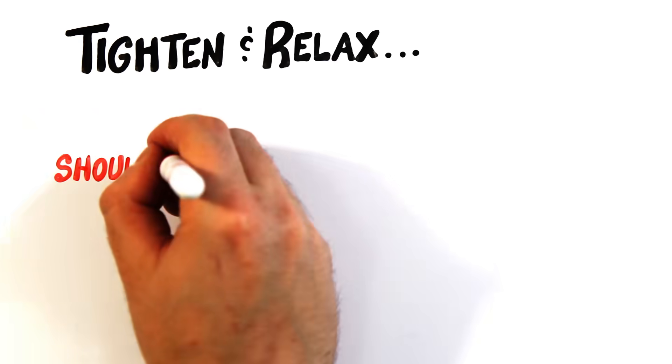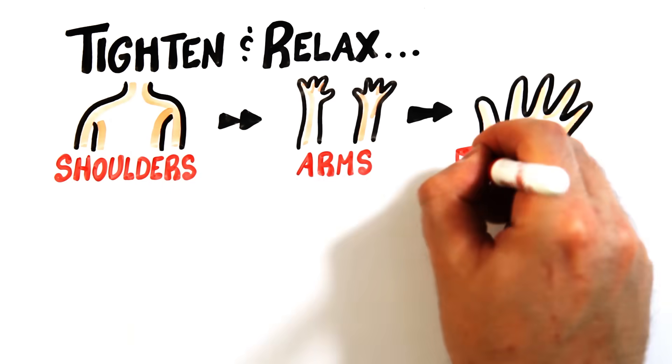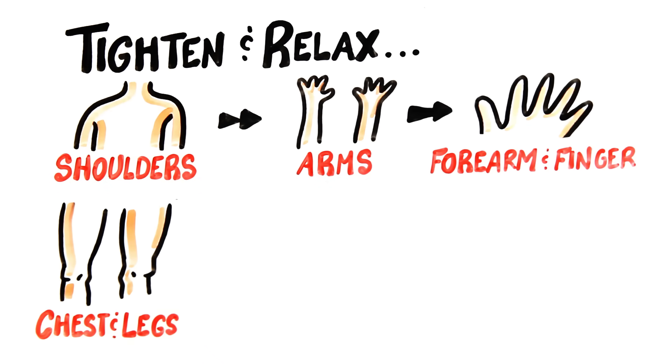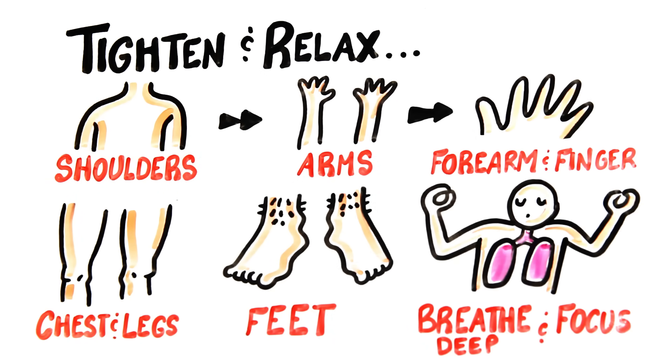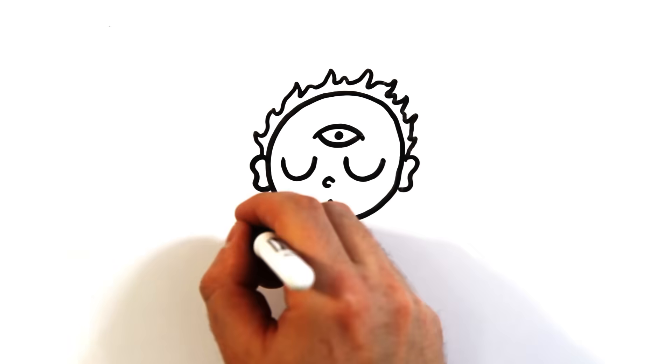Then slowly make your way down your body and do the same thing to each muscle group. Tighten and then relax your shoulders, then arms, from forearms to fingers, chest and legs, and finally your feet, all while breathing deeply and focusing on the relaxation.